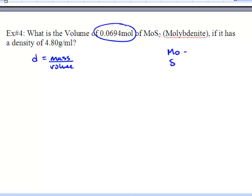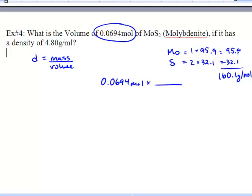We've got Mo, we've got S. We have one of these and two of these. We have times 95.9 and times 32.1. We add these up and we get 160.1 grams per mole. Alright, so that's how much mass we have for one mole. Okay. So we're going to determine how many grams we actually have. 0.0694 moles and we're going to get it into grams. So we want moles on the bottom and we're going to put 160.1 grams over here. And we get 11.11 grams.